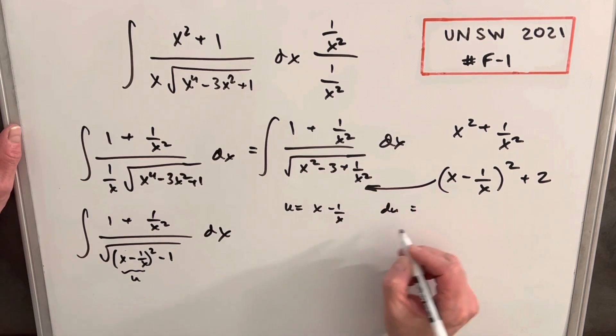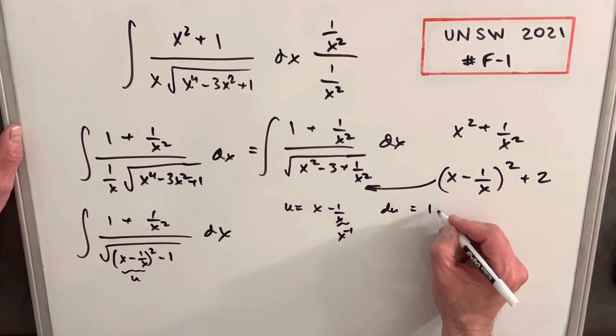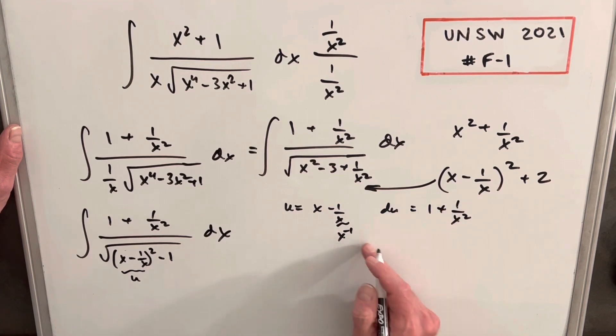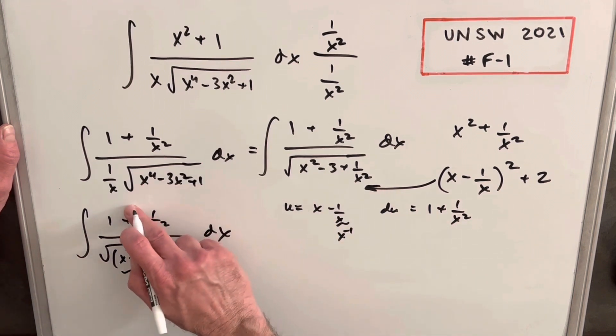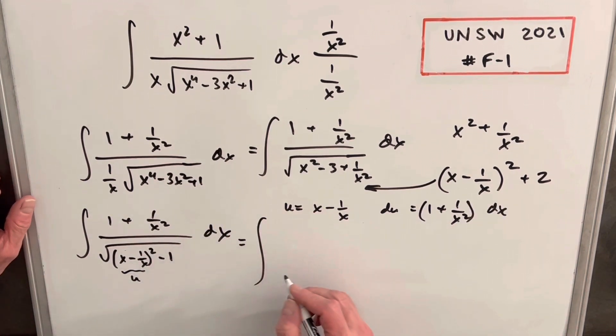Our du will be derivative of x is 1. Derivative of this, we can look at this as x to the minus 1. So using the power rule, we're going to have plus 1 over x squared or x to the minus 2. And so you see, because we have a negative power, the minus, that's how we get this plus back that we want in the numerator to match what we have here. We'll make the substitution. We notice we have our du as our whole numerator. So we're just going to have du over the square root of u squared minus 1.